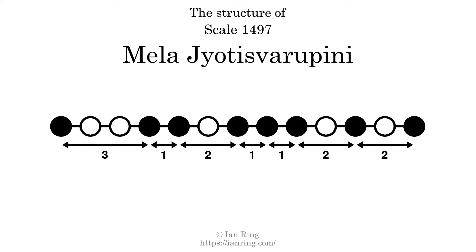The structure of a scale is a description of the interval distance between each successive tone. This scale has a structure of 3, 1, 2, 1, 1, 2, 2.